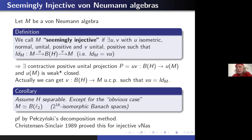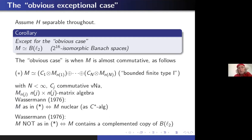The proof uses Pełczyński's decomposition method: to show two Banach spaces X and Y are isomorphic, if X is isomorphic to a complemented subspace of Y, and Y is isomorphic to a complemented subspace of X, then X and Y are isomorphic — this is like Cantor-Bernstein but for Banach space isomorphisms. The obvious exceptional case is when M is the direct sum of finitely many algebras of the form L∞ tensor finite-dimensional matrix algebras — what experts call type I algebras of bounded degree — meaning M is essentially almost commutative. By a result of Simon Wassermann, this is equivalent to M being nuclear as a C*-algebra. Wassermann also shows that if M is not nuclear, then M contains a complemented copy of B(ℓ²).